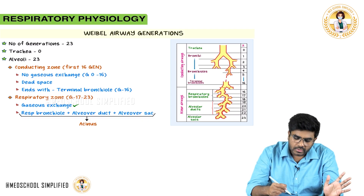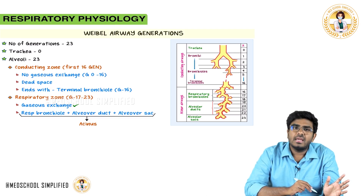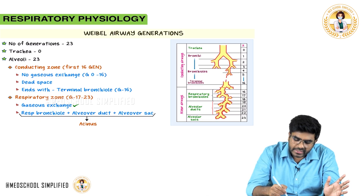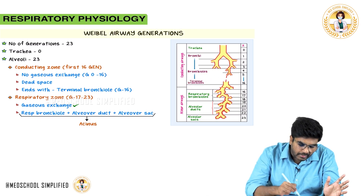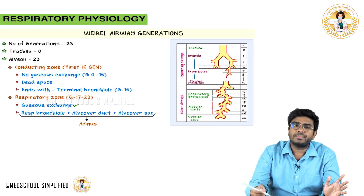Because there is no exchange of gases in the conducting zone, it is considered dead space. The conducting zone ends with the terminal bronchioles, which is generation number 16.